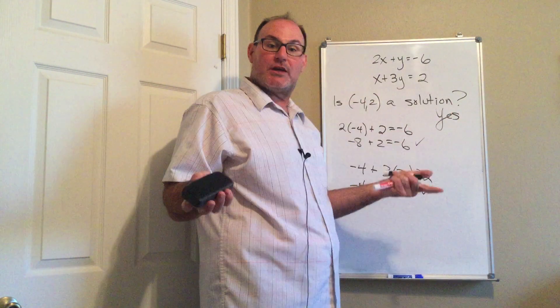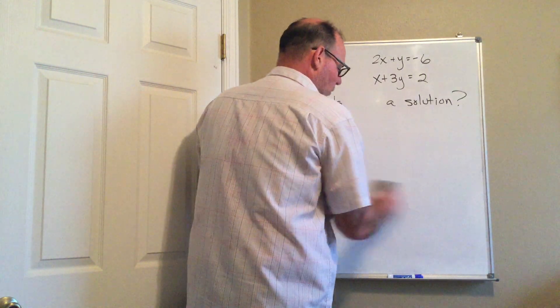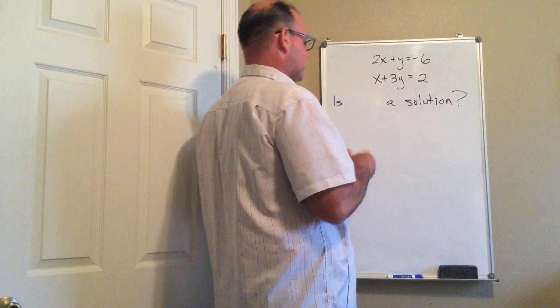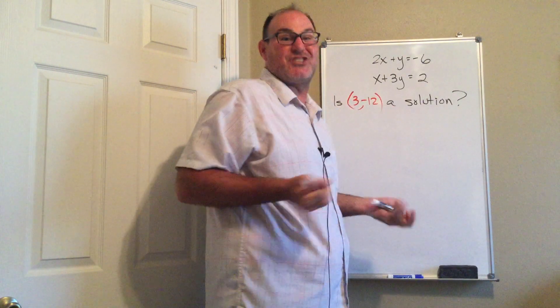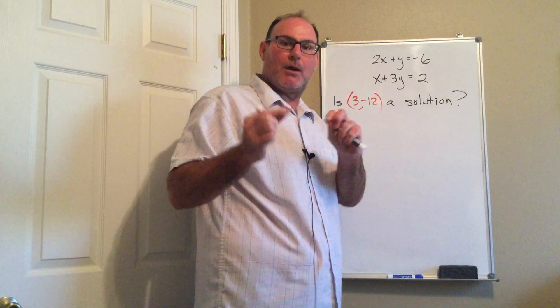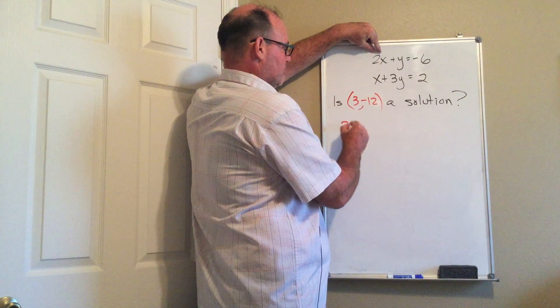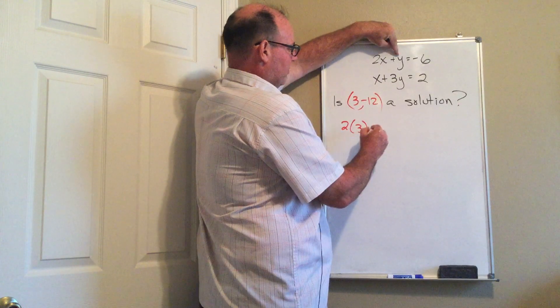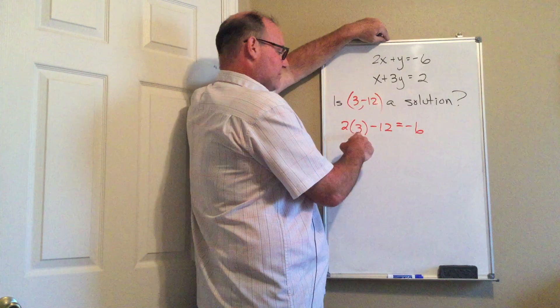Now let's look at one so that you know what to do when one is not a solution. For instance, I'm gonna ask you: is (3, -12) a solution? Now I just gave it away that it's not, but I want to show you why. So I'm gonna take the 3 and the (-12). So 2 times 3 plus the y value, which is (-12). 2 times 3 is 6.